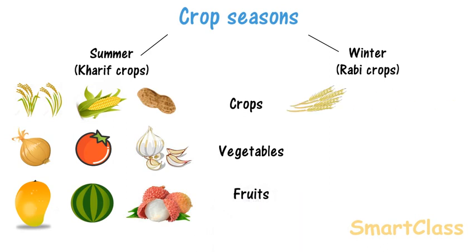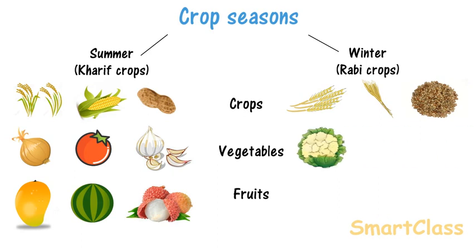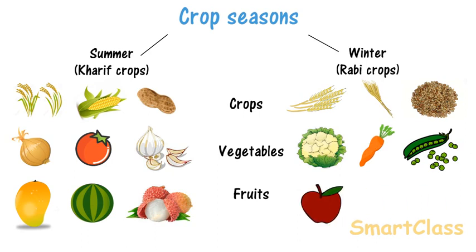Similarly, wheat, barley, gram are rabi crops. Cauliflower, carrot, radish, peas are examples of rabi vegetables. Apple, banana, pomegranate are rabi fruits.